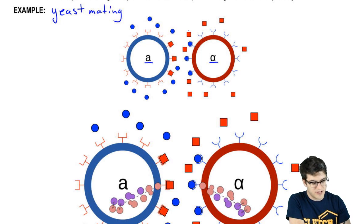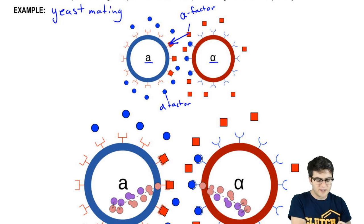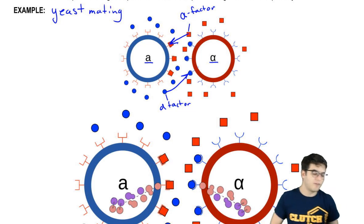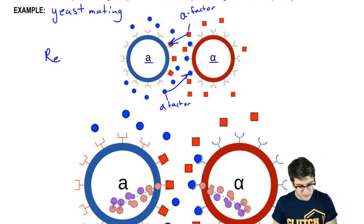Now, alpha particles release what are called alpha factors. And what's going to happen is, these alpha particles will bind to the receptors on the surface of the alpha cells, and this is reception.